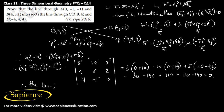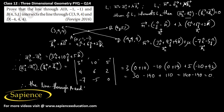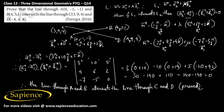Since this value is 0, we can conclude that the line through points A and B intersects the line through points C and D. Hence proved. Thank you.